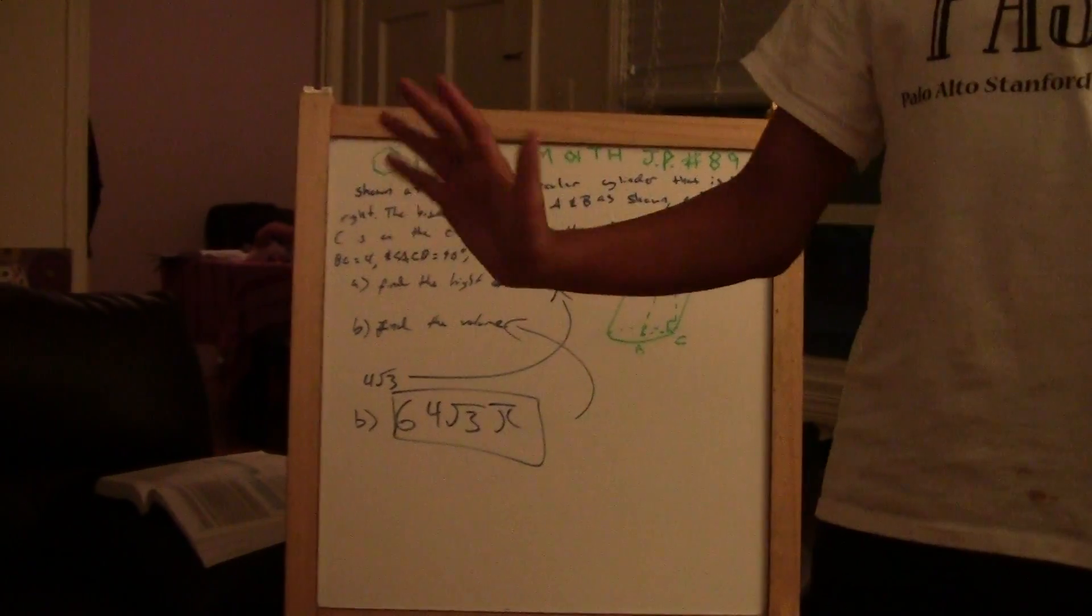So that's 4 squared times π and then times the height, times 4 times the square root of 3. So that is 16π times 4 times the square root of 3, then that's 64 times the square root of 3 times π. So that's our answer: 64√3π, that is the volume right there.